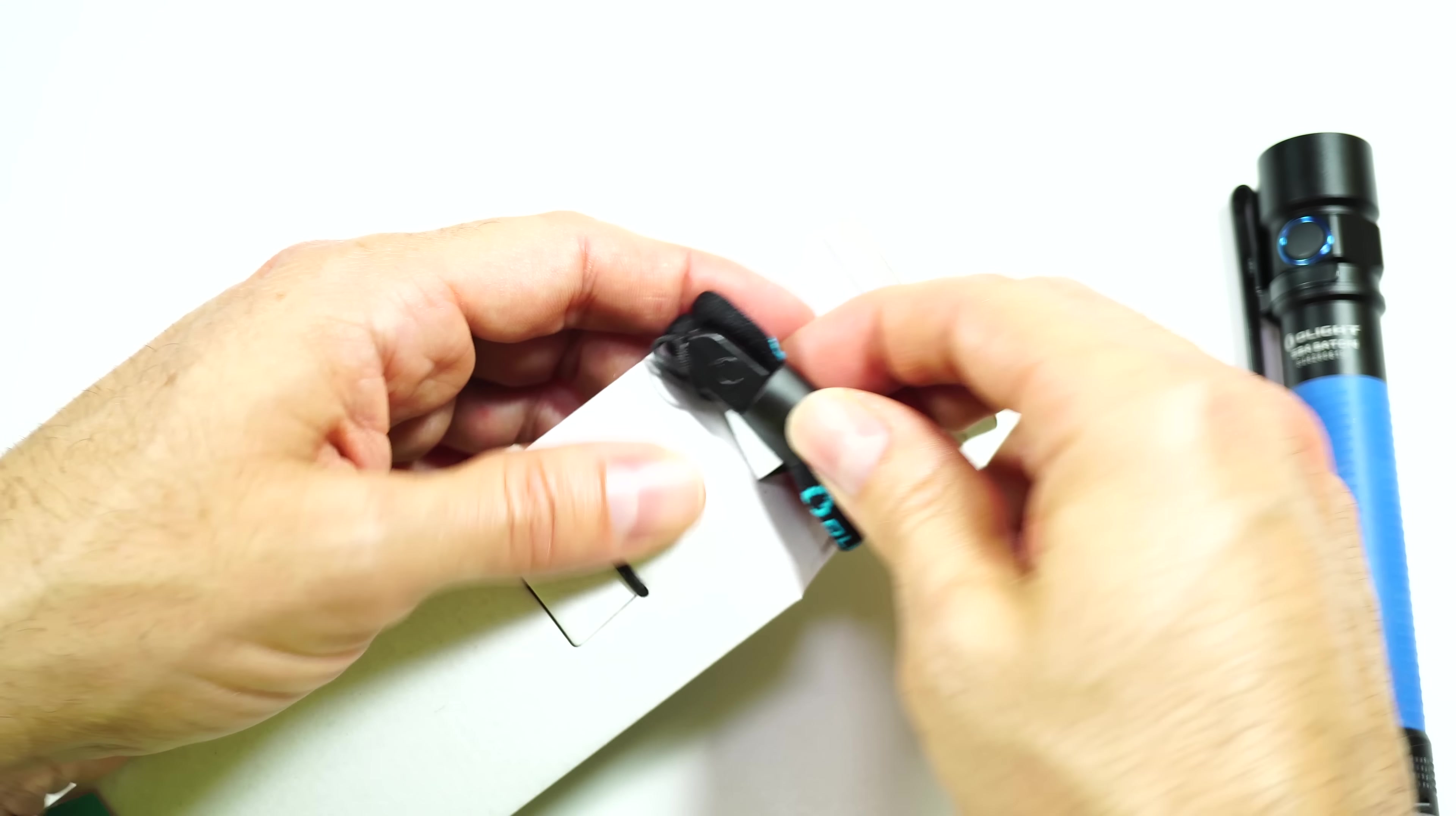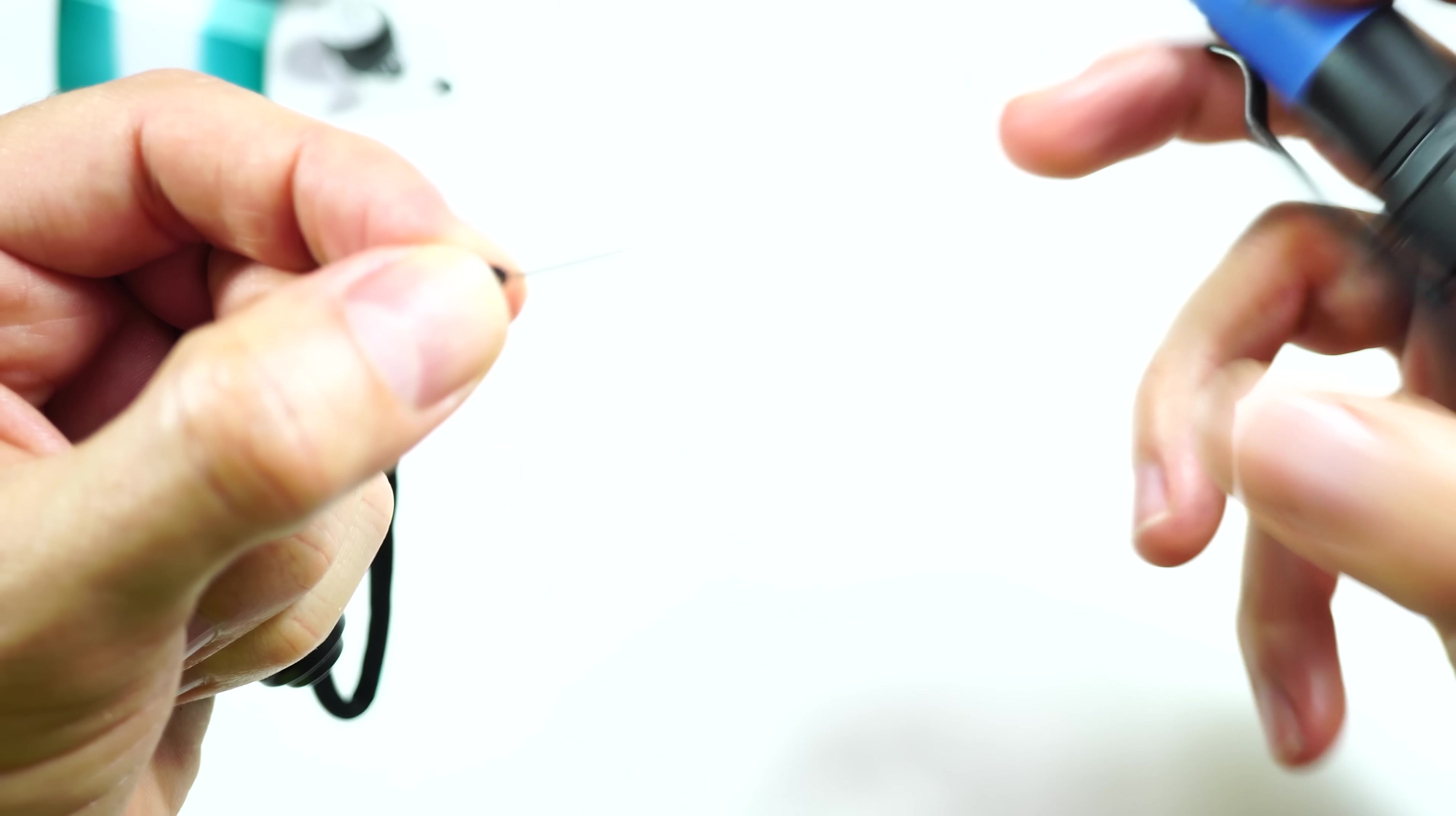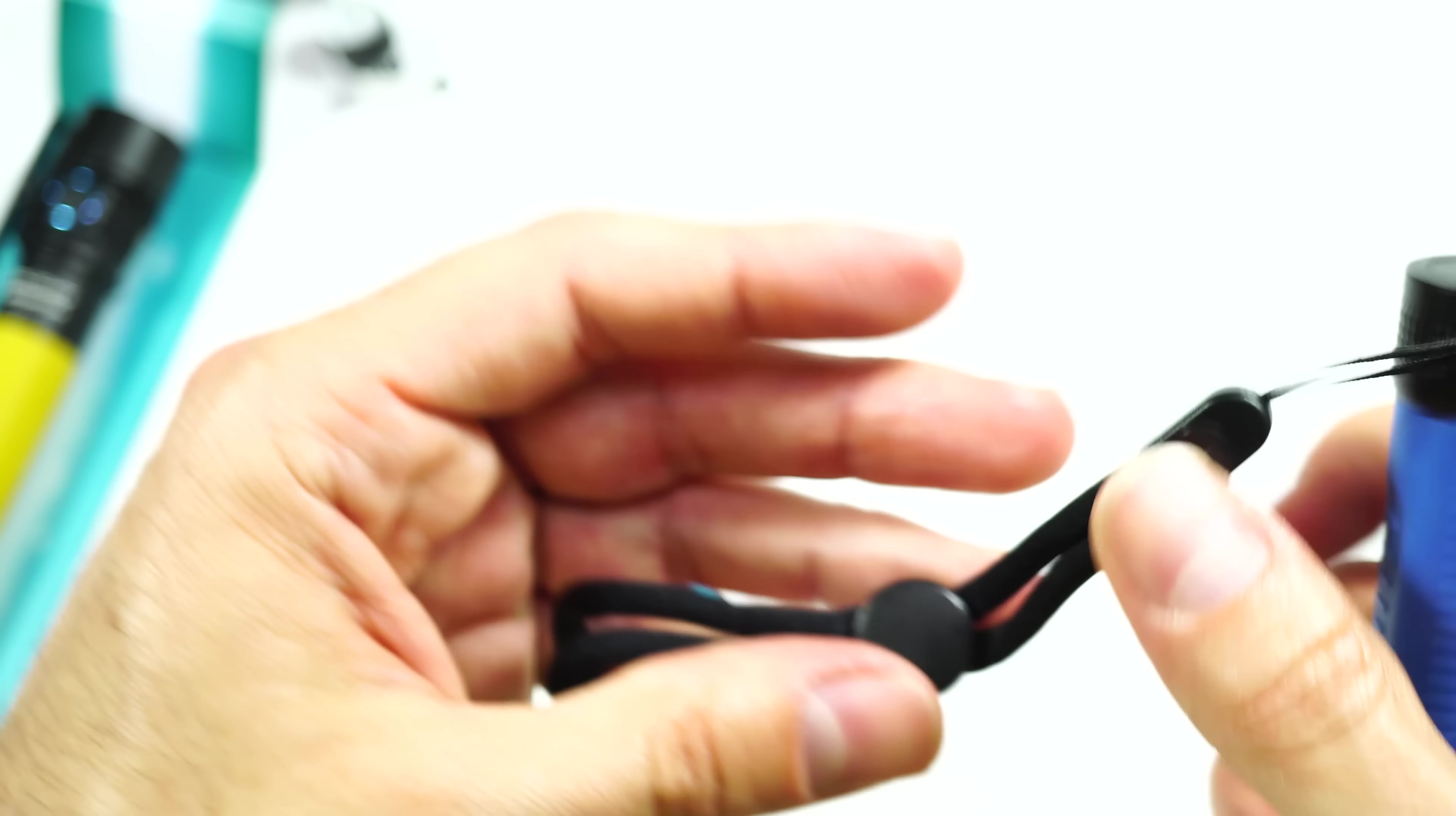So in here you get a lanyard, and one of the fancy things, this is the small things that count, right? On the tip of this lanyard, there is a little metal piece, a little metal ring, and that makes it easy so that when you're trying to feed it through the lanyard hole, it can be very easily fed through. It's almost like a needle on the tip of the lanyard, so that you can pull it through. Otherwise, you have to feed this little piece through here, and that would be a challenge. So that's a nice little afterthought that they've included there.